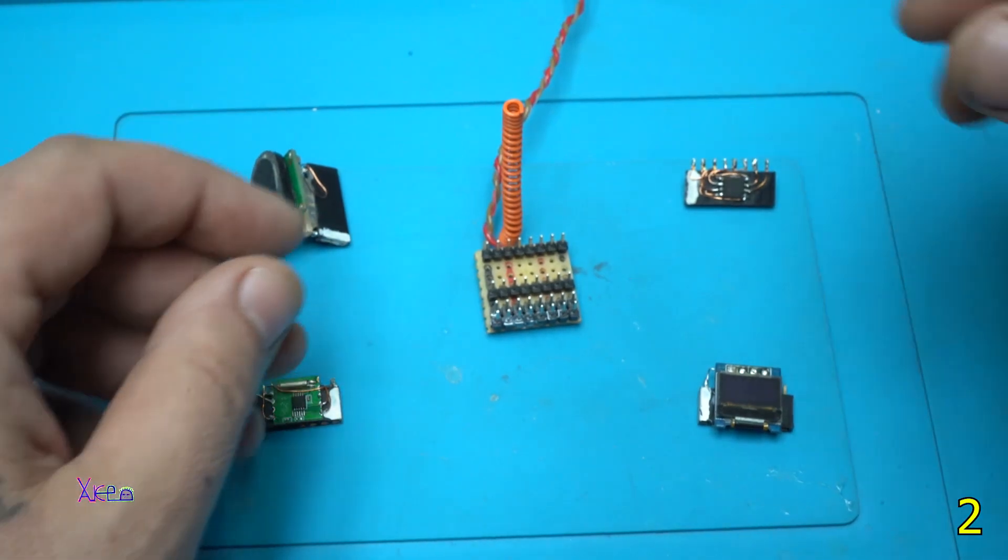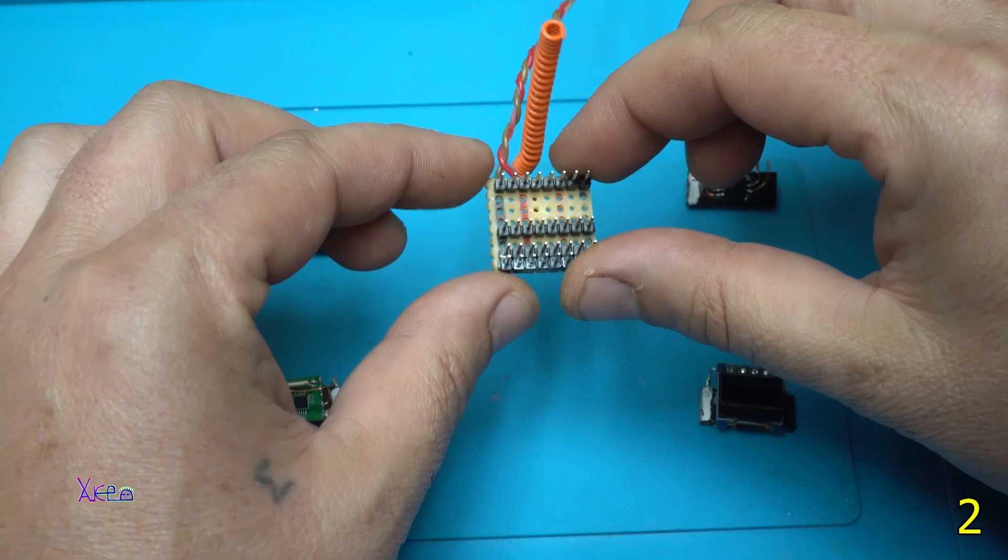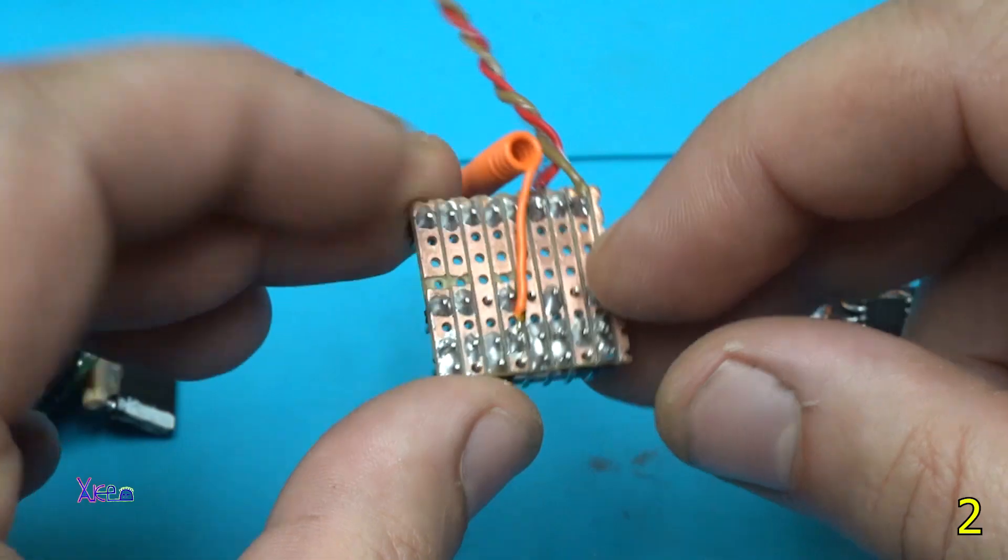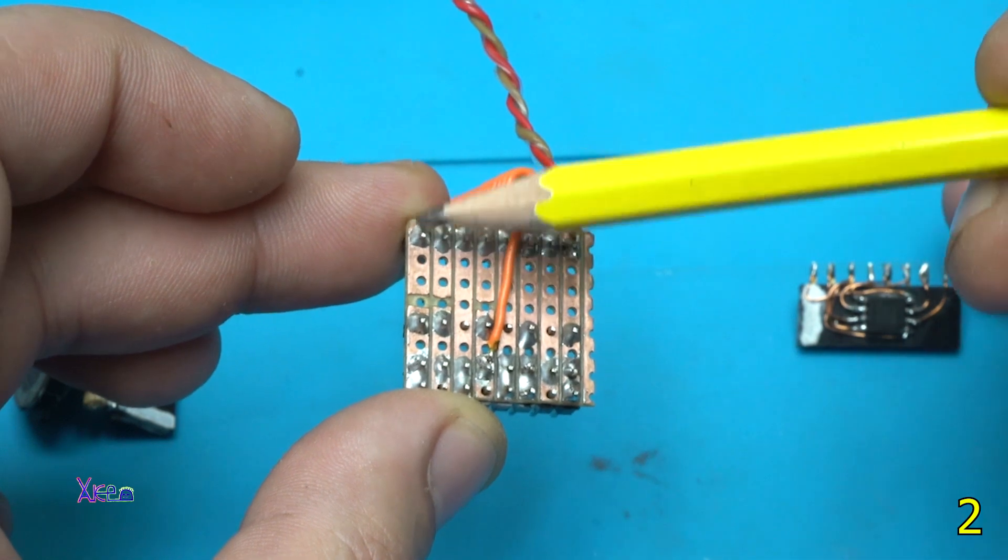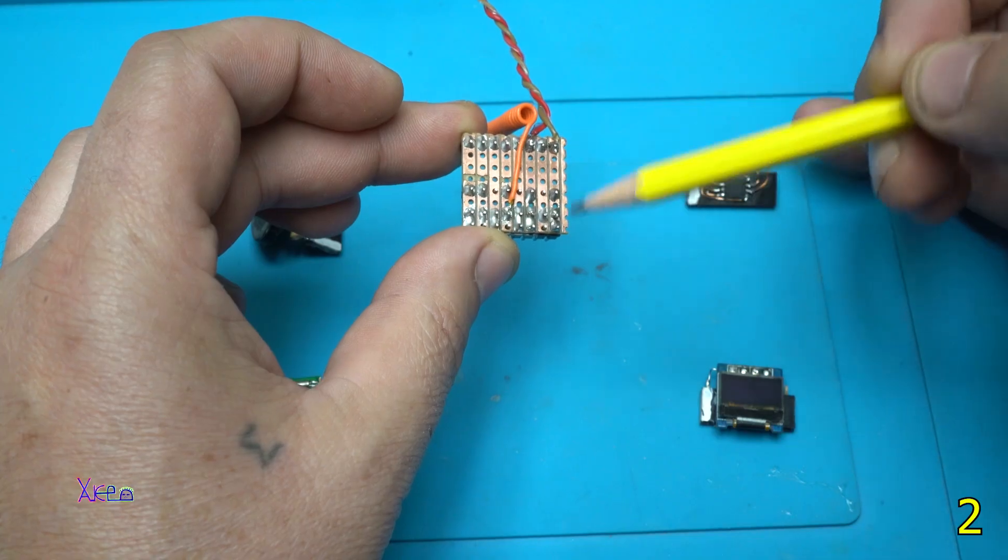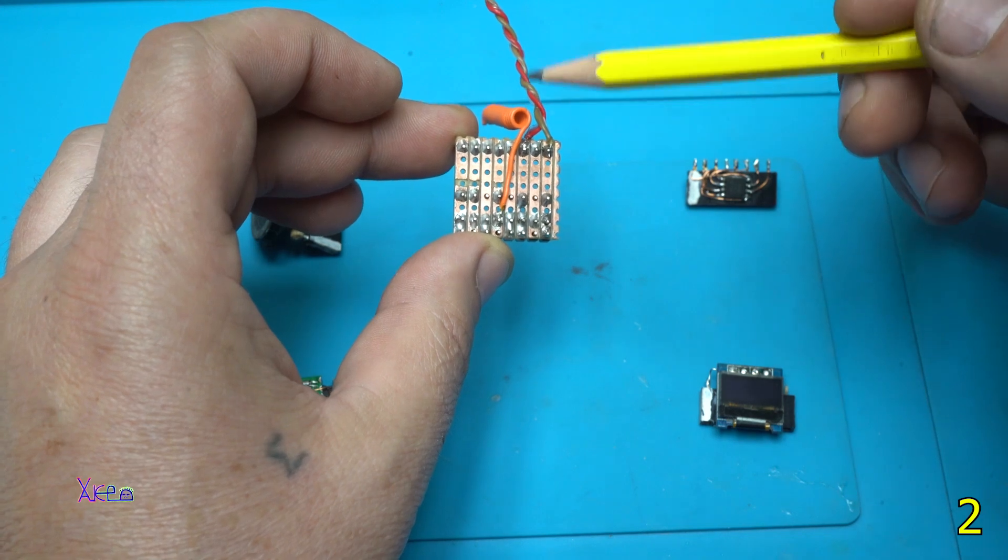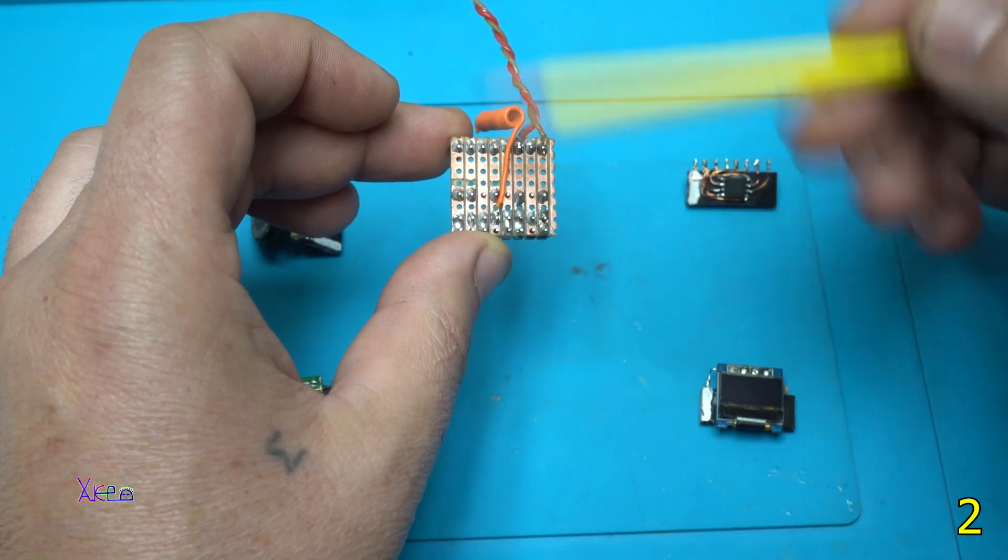So to explain some stuff, this is the main board. On the bottom you can see that I have eight rows. Each row is for example, let's say ground, positive...